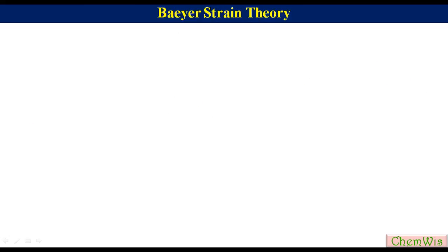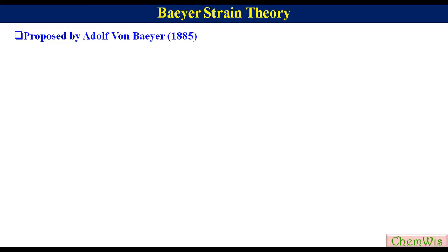Baeyer Strain Theory. Adolf von Baeyer, a German chemist, in 1885 made a proposal to explain the stability of carbocyclic compounds like cyclopropane, cyclobutane, cyclopentane, and cyclohexane. He postulated that carbocyclic rings are planar, just like polygons.